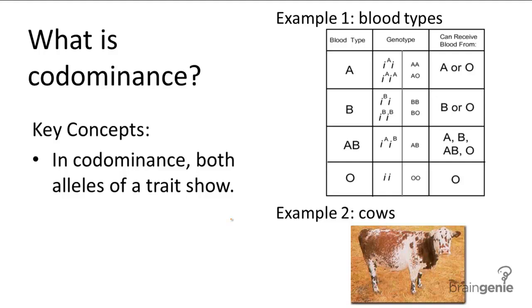Codominance occurs in particular cases where both of the alleles that are coding for a trait are expressed. Blood type is the perfect example for this.